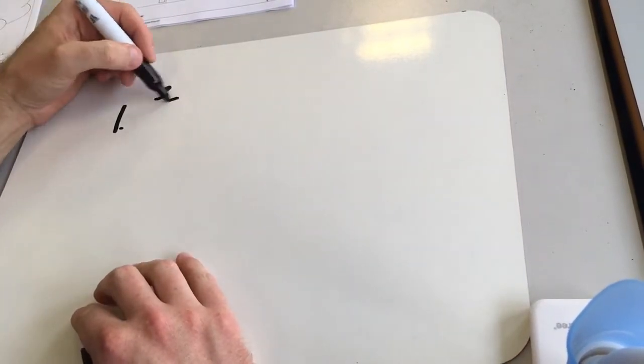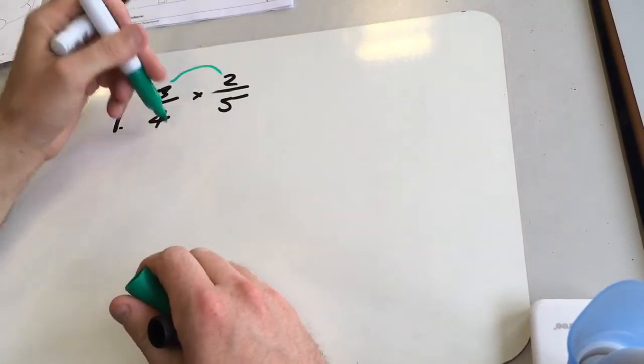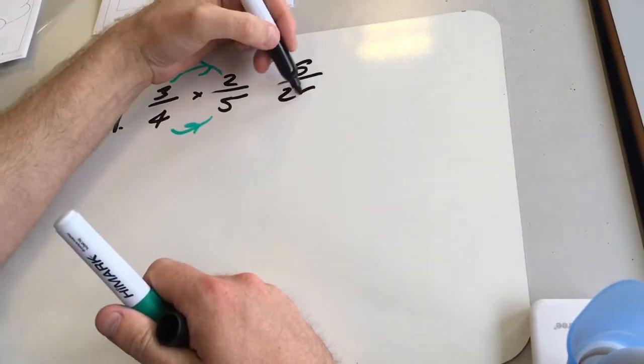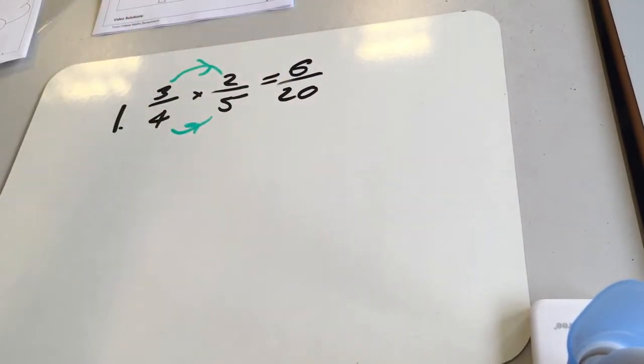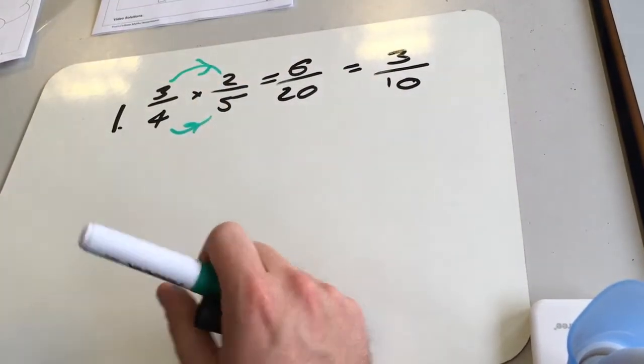So first question, 3 over 4 times 2 over 5. So this one you're just going to times along the tops and then times along the bottoms, so we're going to get 6 over 20, which will simplify to give you 3 over 10.